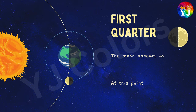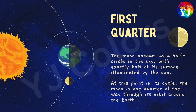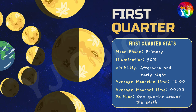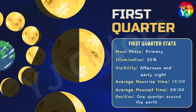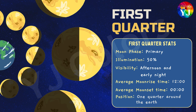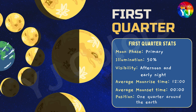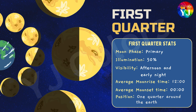First Quarter: The Moon appears as a half-circle in the sky with exactly half of its surface illuminated by the Sun. At this point in its cycle, the Moon is one quarter of the way through its orbit around the Earth. Statistics: Moon Phase — Primary; Illumination — 50%; Visibility — afternoon and early night; Average Moonrise and Moonset Time — 12 noon to 12 midnight; Position — one quarter around the Earth.